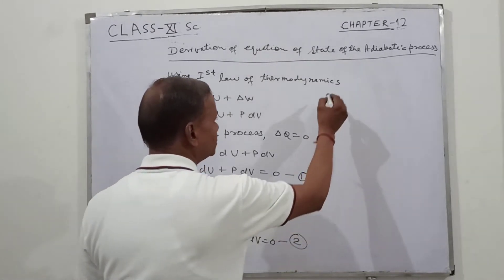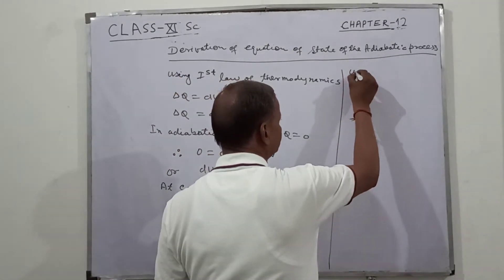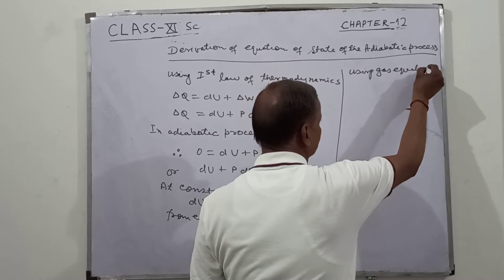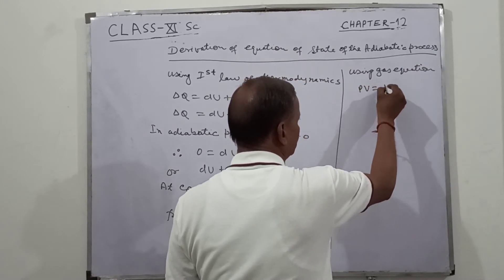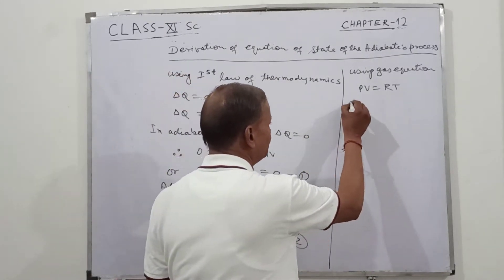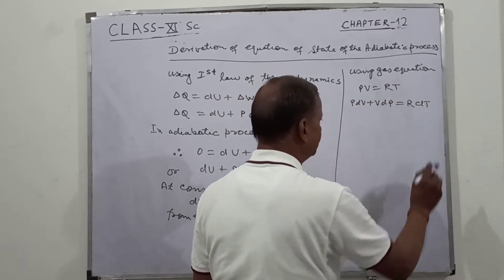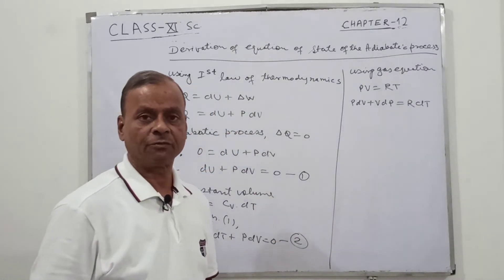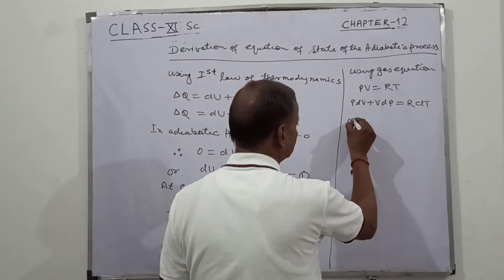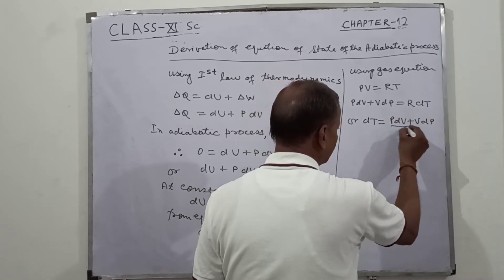Now we use the ideal gas equation: PV equals RT, taking one mole of gas. Differentiating, P dV plus V dP equals R dT. In an adiabatic change, pressure, volume, and temperature — all three parameters change. Therefore, dT equals P dV plus V dP, divided by R.